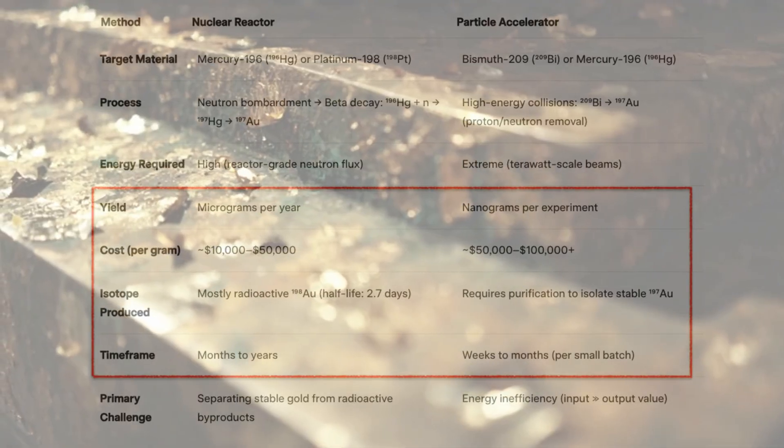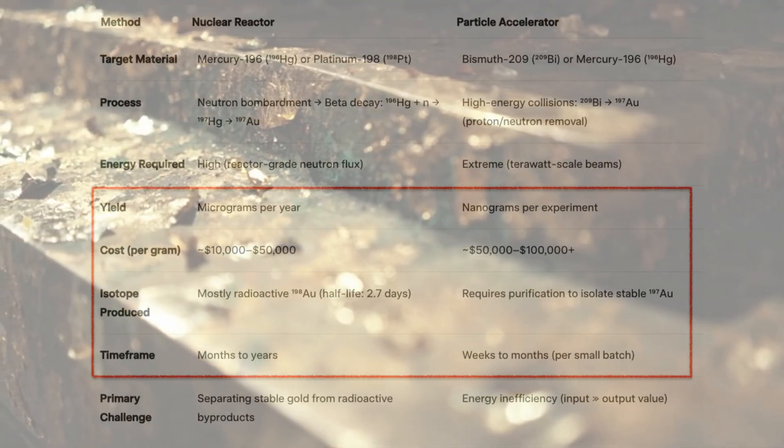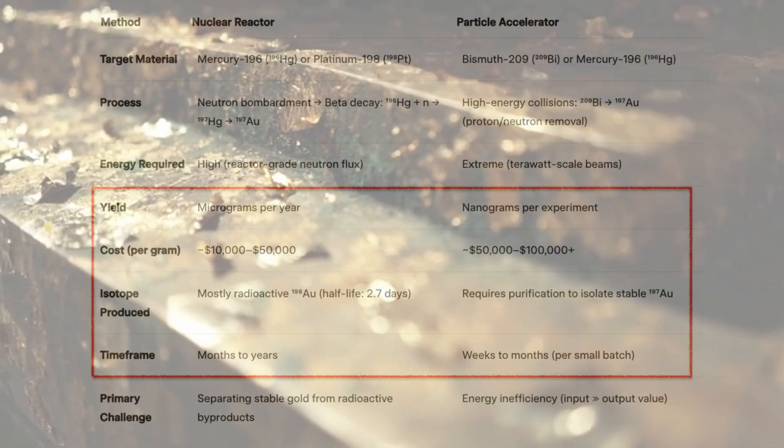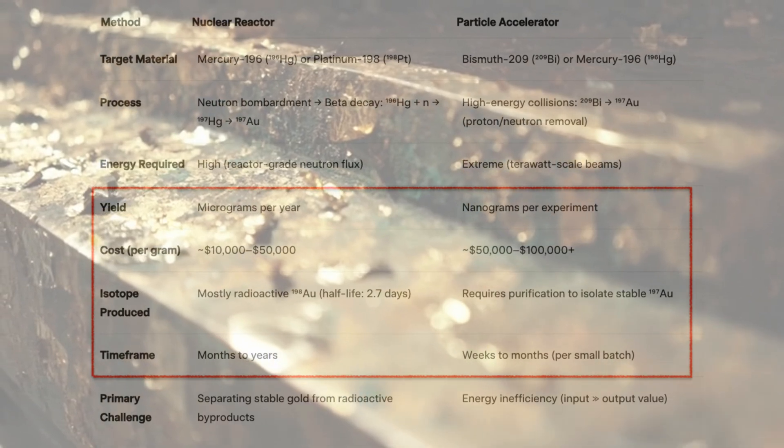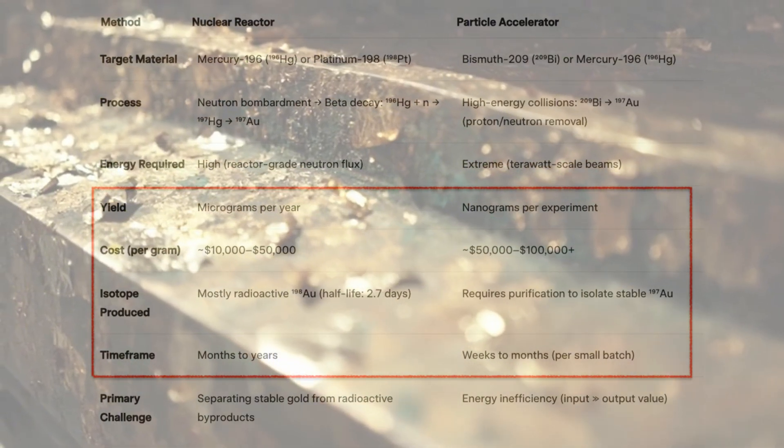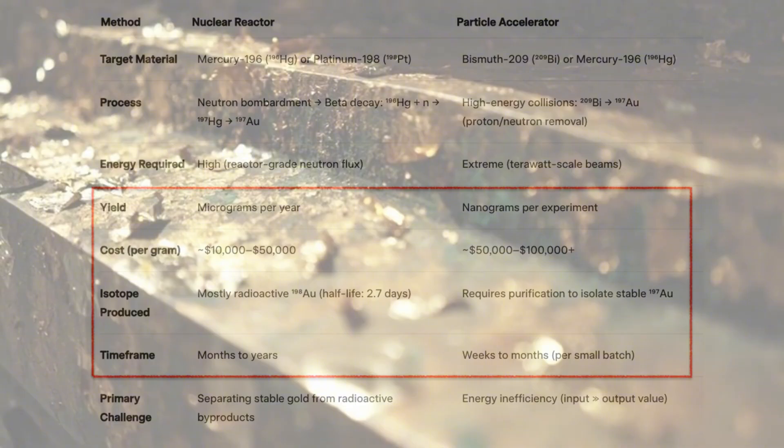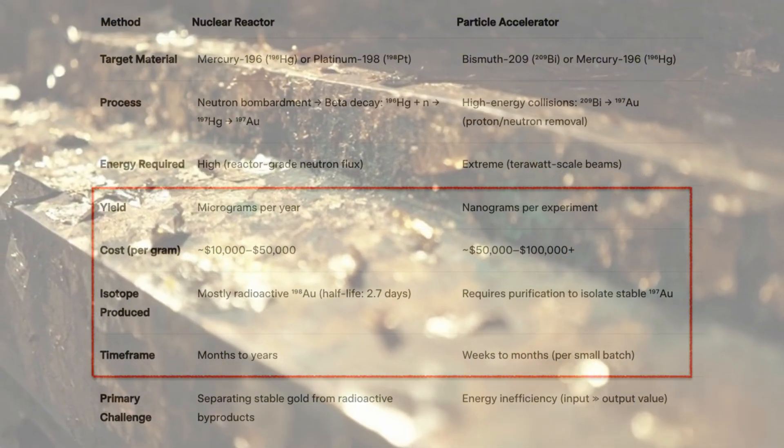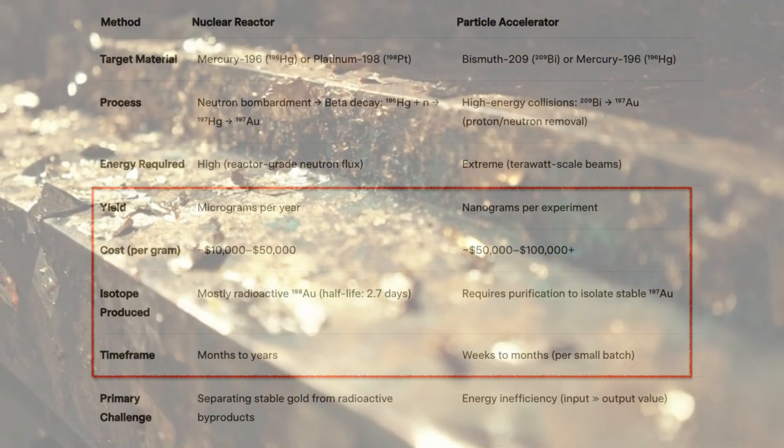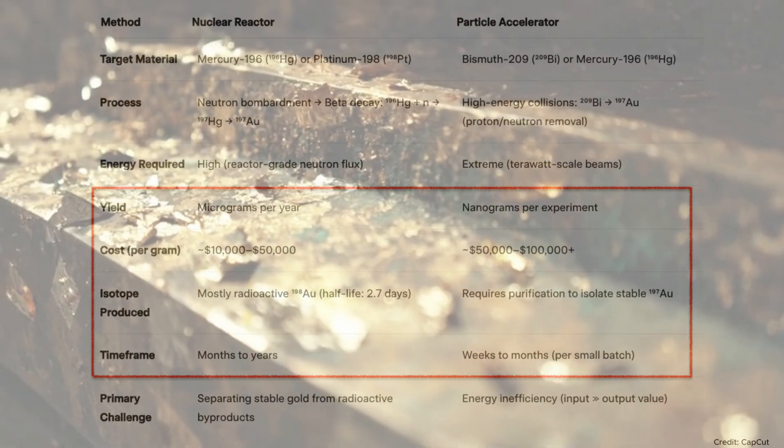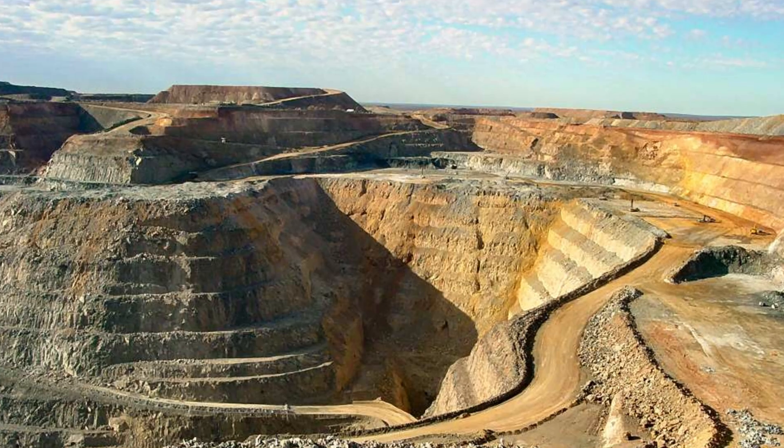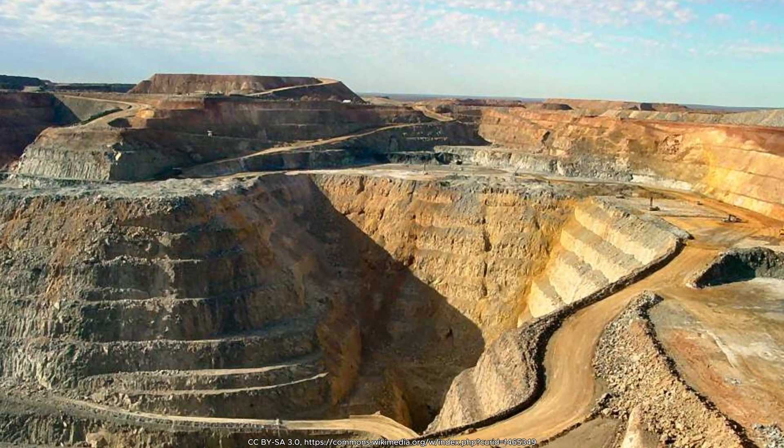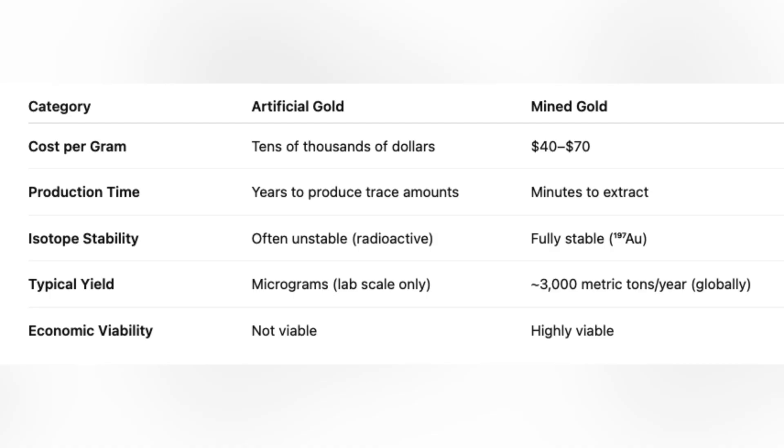The idea of manufacturing gold sounds like a scientific triumph, but it fails a cost-benefit analysis by a landslide. Artificial gold costs tens of thousands of dollars per gram, requires years to produce even trace amounts, and often results in unstable isotopes that decay quickly. In contrast, mined gold costs around $40 to $70 per gram, can be extracted in minutes, and is entirely stable.